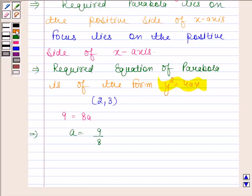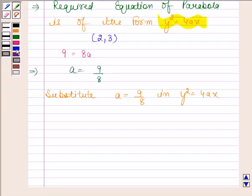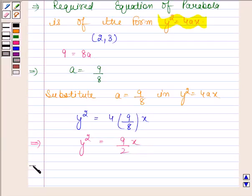Now we will substitute a=9/8 in the standard equation of parabola, that is y²=4ax. By substituting the value of a, we get y²=4×(9/8)×x. This implies y²=(9/2)x, and this implies 2y²=9x.